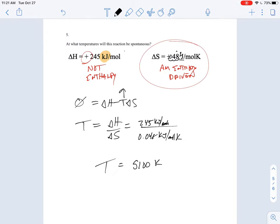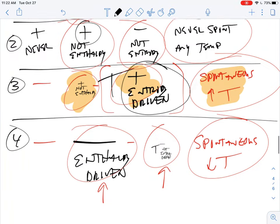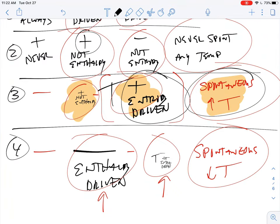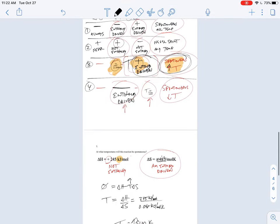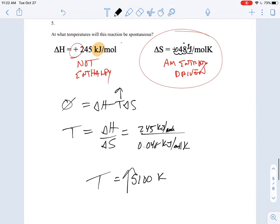If you're talking about 5100 Kelvin, it's going to be spontaneous if we are above 5100 Kelvin. This is only going to be spontaneous when the temperature is high because it's positive and positive. So your answer should be at temperatures above approximately 5100 Kelvin.